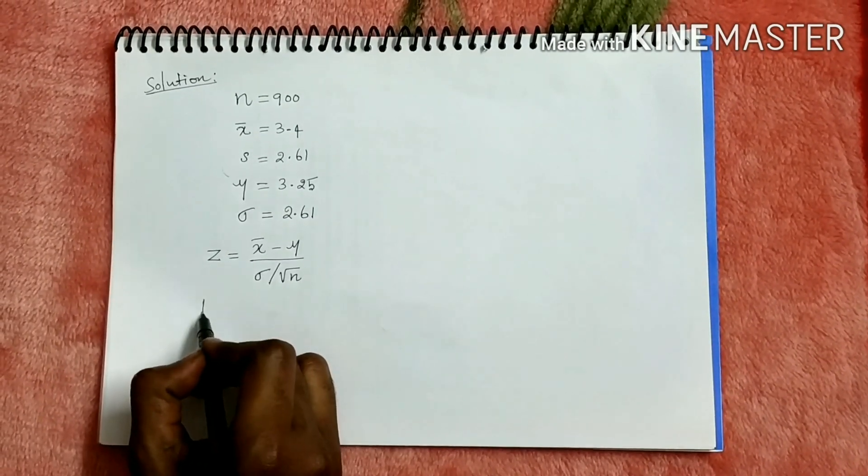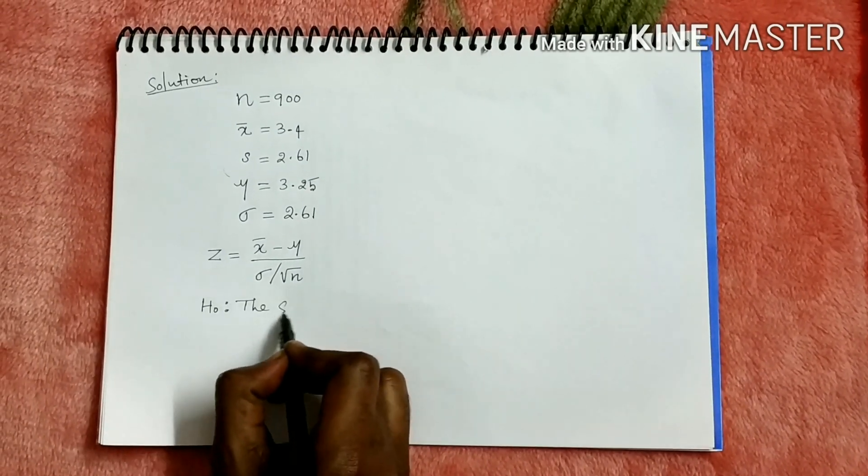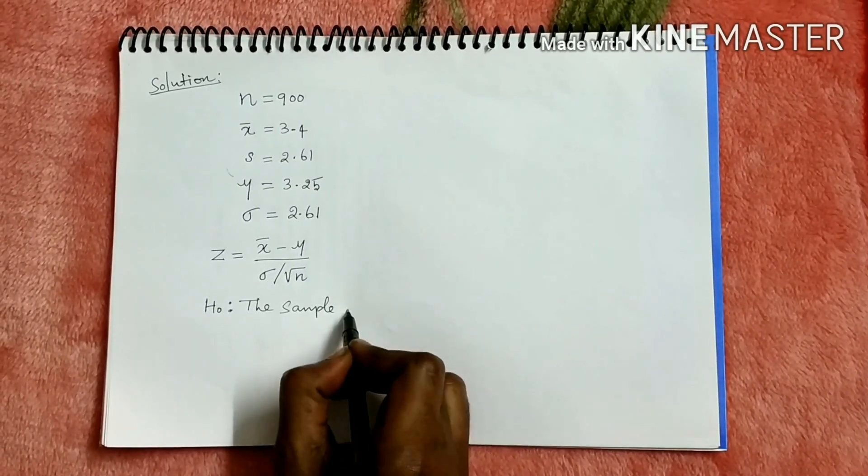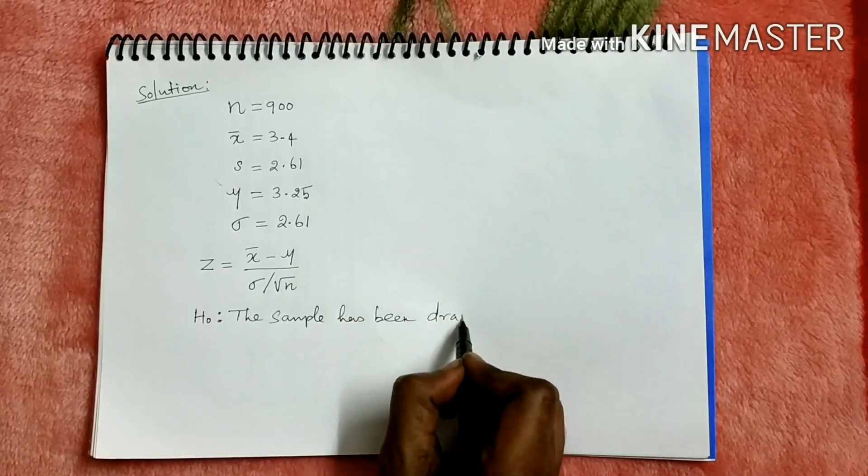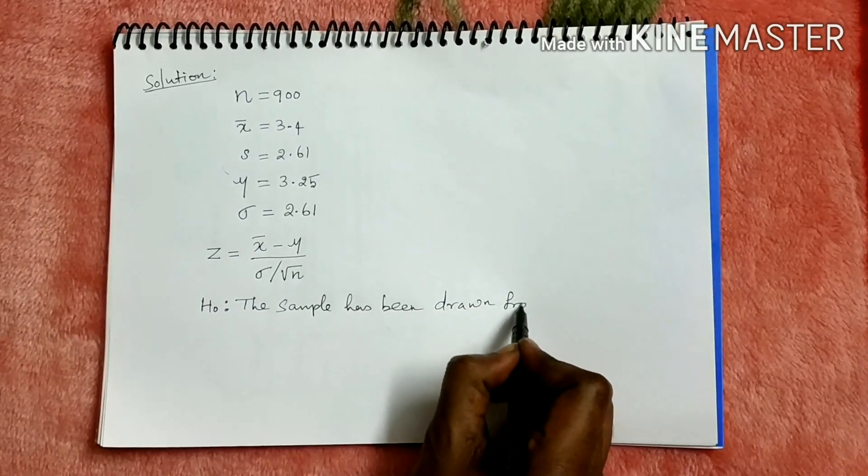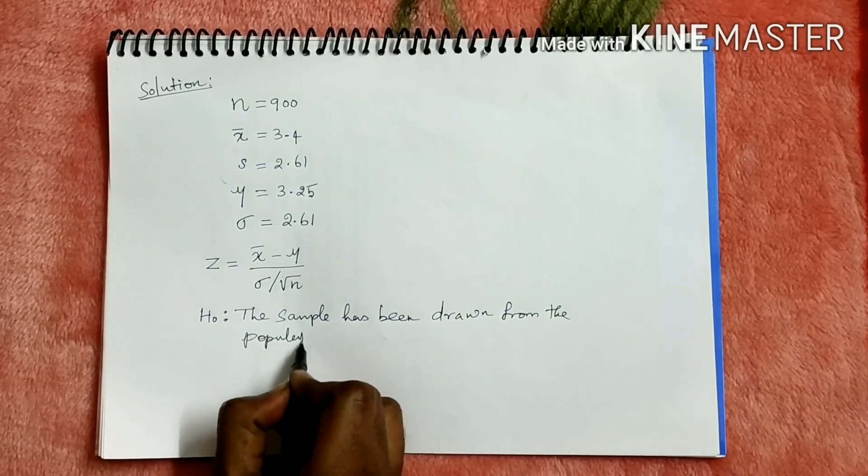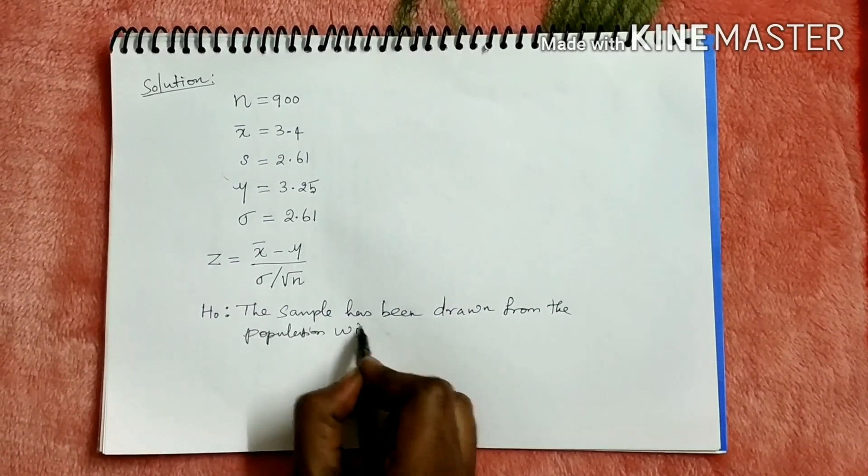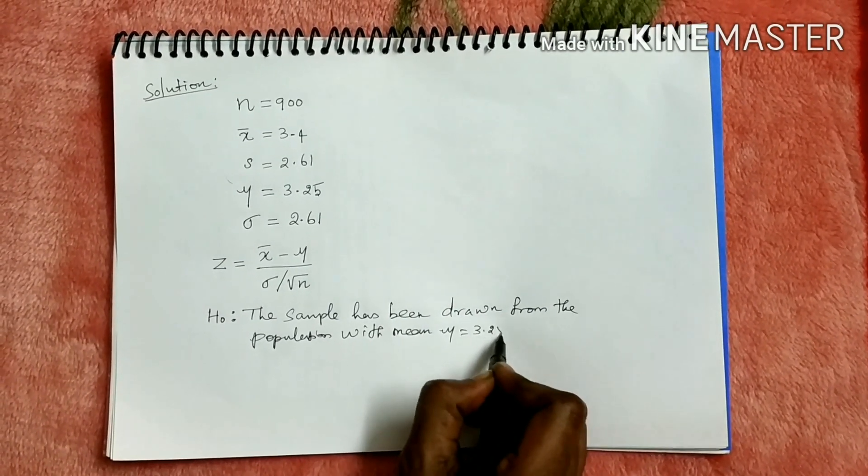First we have to fix the null hypothesis. What is the null hypothesis? The sample has been drawn from the population with mean mu is 3.25 cm.